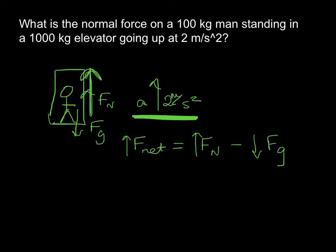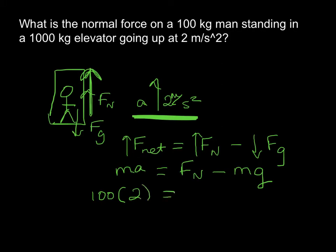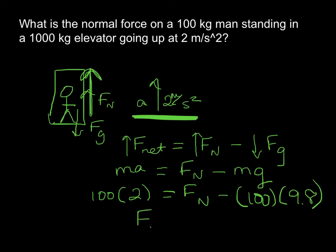We plug in our expressions: net force is mass times acceleration, equal to our normal force minus the gravitational force, which is mass times gravity. So 100 times 2 equals our normal force minus 100 times 9.8. We find that our normal force is 1,180 newtons.